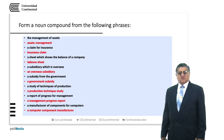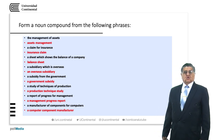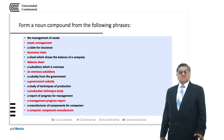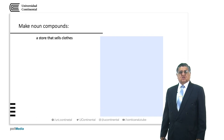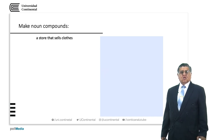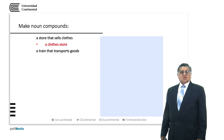'Manufacturer' is a general word. So we give more information with 'component' and with 'computer'. Next: a store that sells clothes — we have 'a store' as the head word, specializing in clothes: 'a clothes store'. A train that transports goods: 'a goods train'.